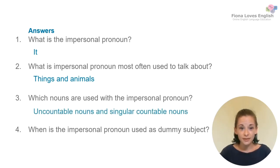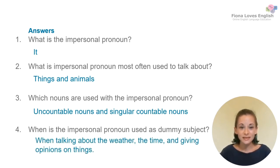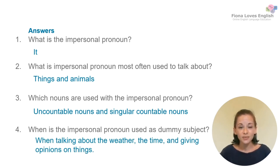Three, the impersonal pronoun is used with uncountable nouns and singular countable nouns. And number four, it's used as a dummy subject when talking about things like the weather, the time, and when giving our opinion.